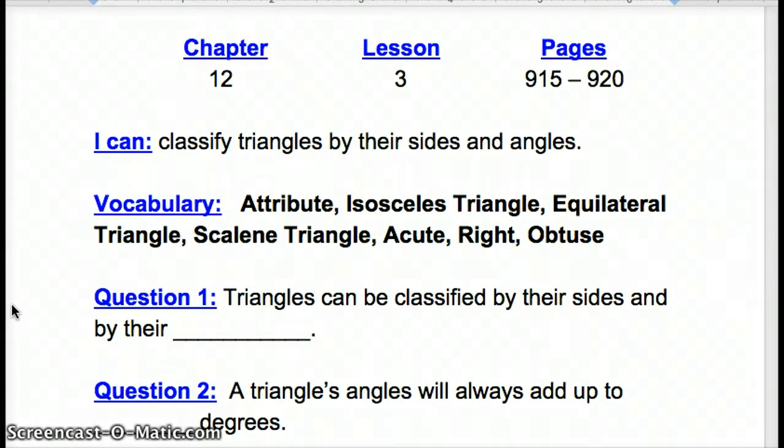Question 1. Triangles can be classified by their sides and by their blank. Question 2. A triangle's angles will always add up to blank degrees.